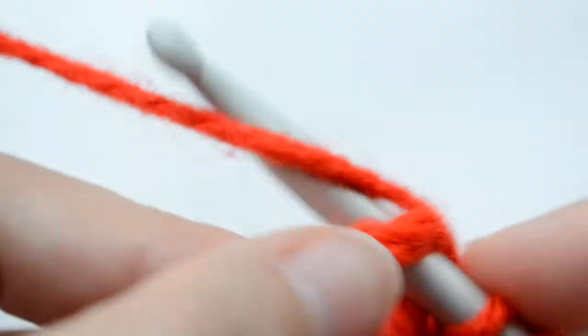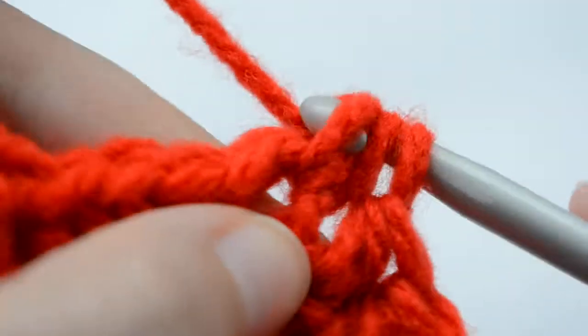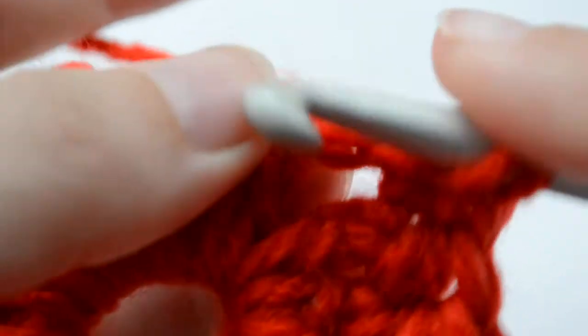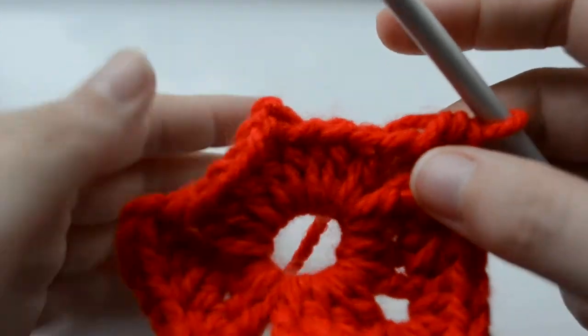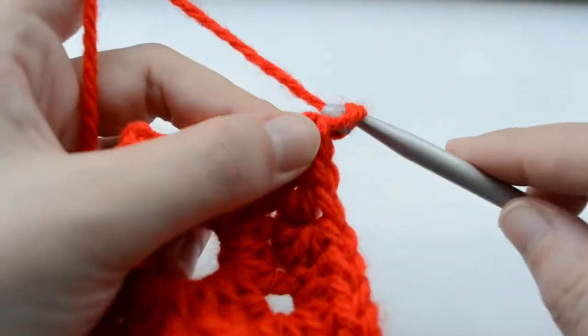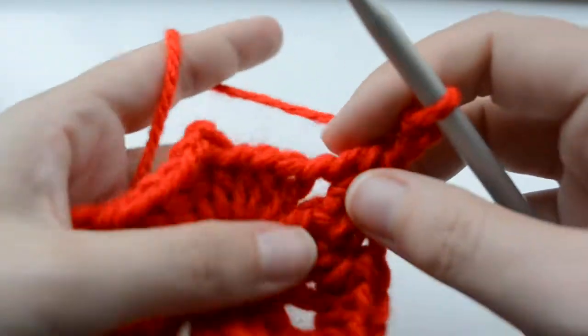Corner again. Working two half double crochets and a chain two.